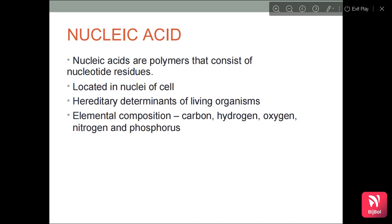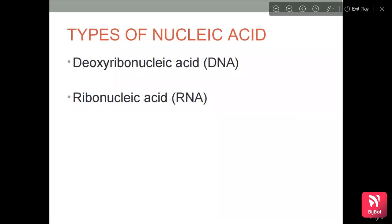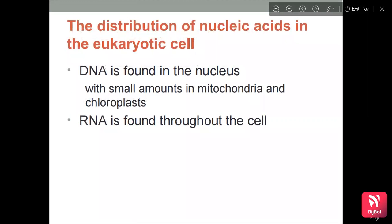There are two types of Nucleic Acids: deoxyribonucleic acid and ribonucleic acid, in short called DNA and RNA. In the eukaryotic cell, DNA is mainly found in the nucleus with small amounts present in the mitochondria and chloroplasts, while RNA is found throughout the cell.